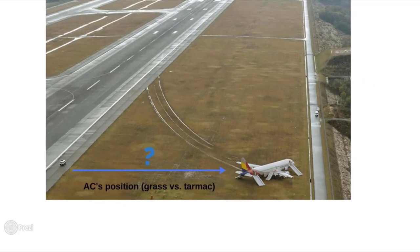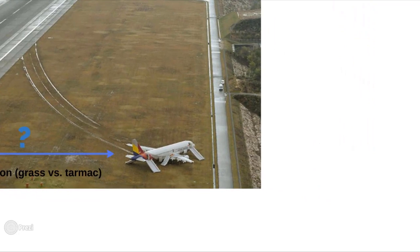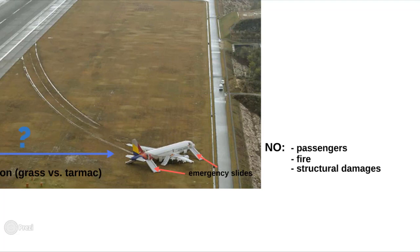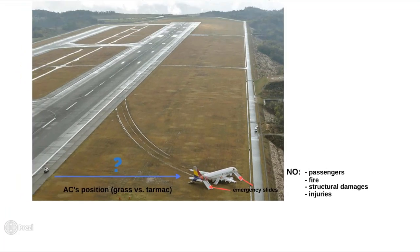We can see that there are emergency slides deployed, but no passengers in the vicinity. There's no fire and there are no significant structural damages, so probably no injuries among passengers either. Finally, is there any special ground equipment? Surprisingly, no — except for those three little vans.